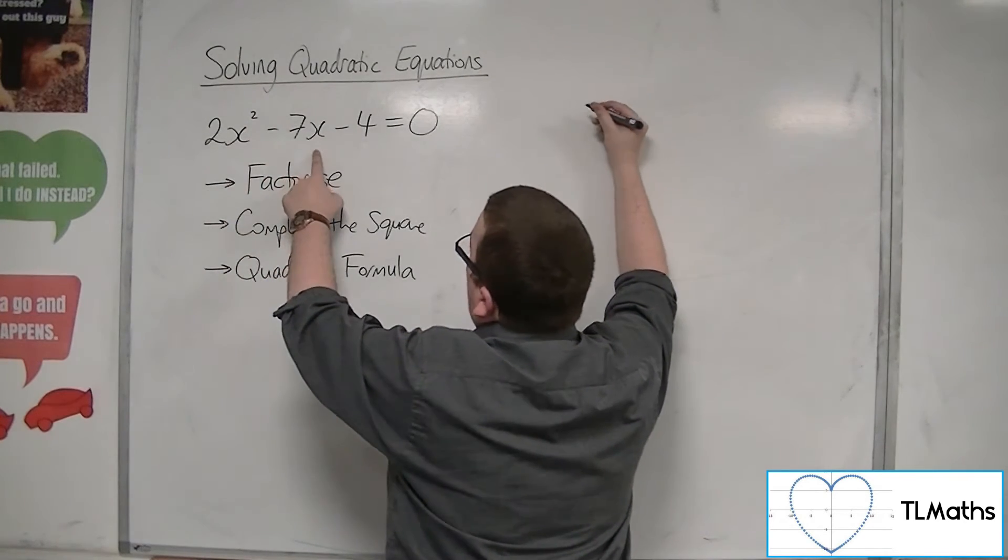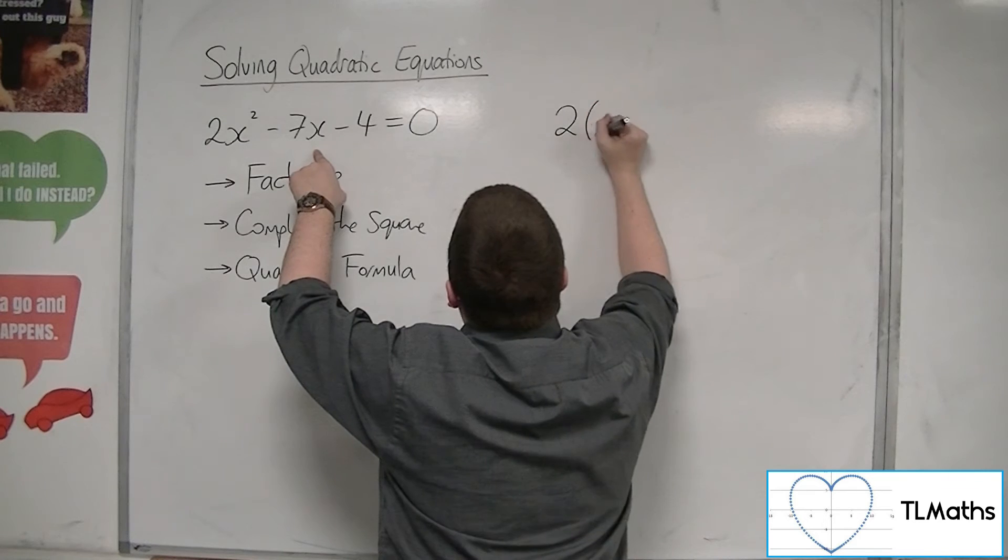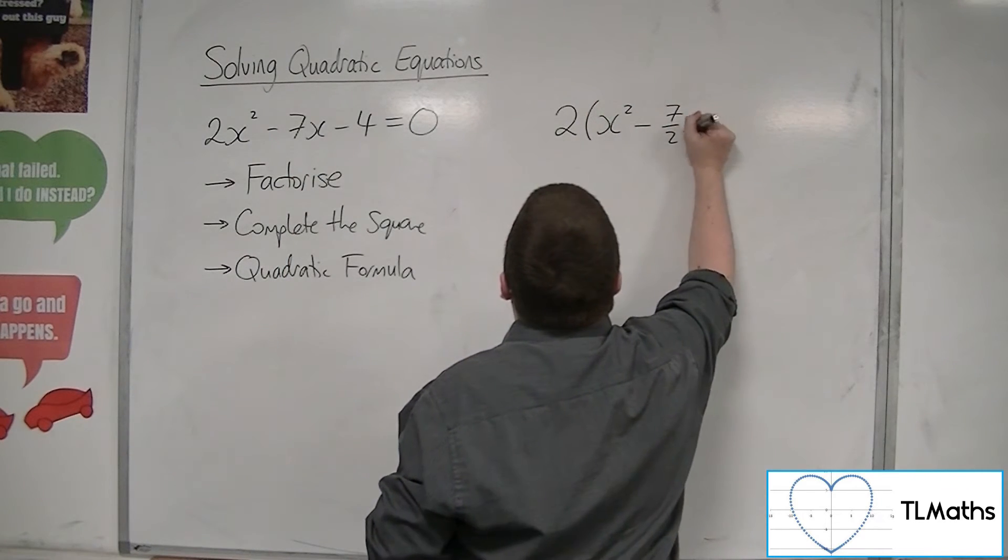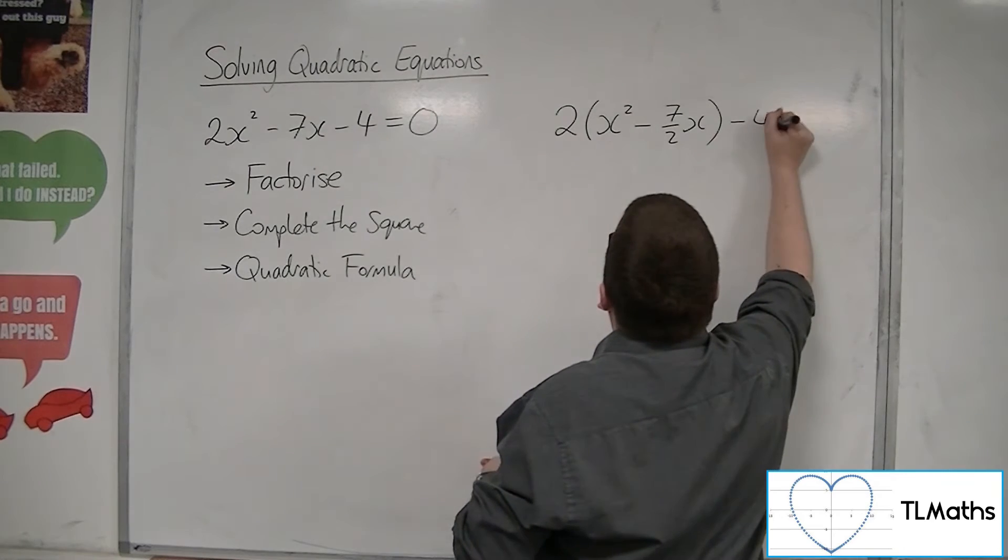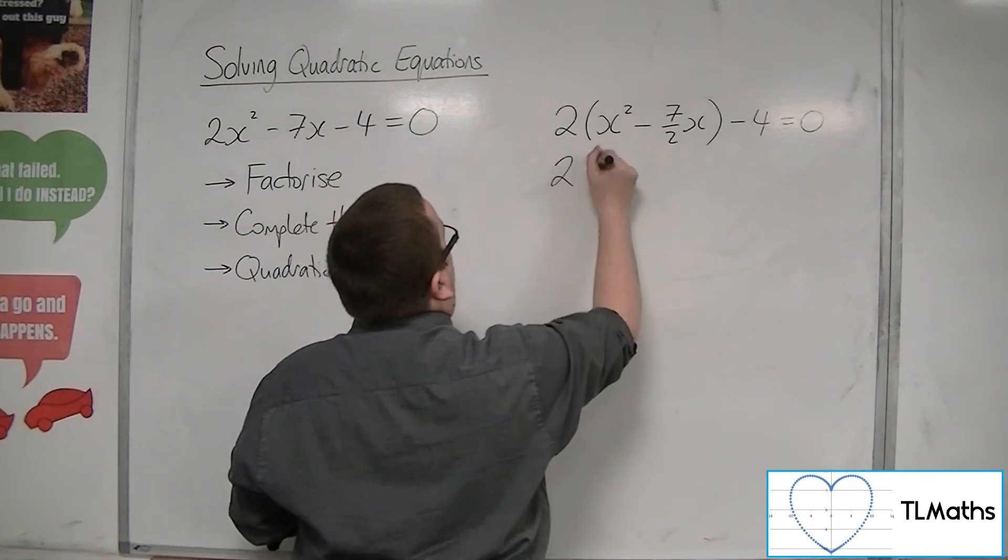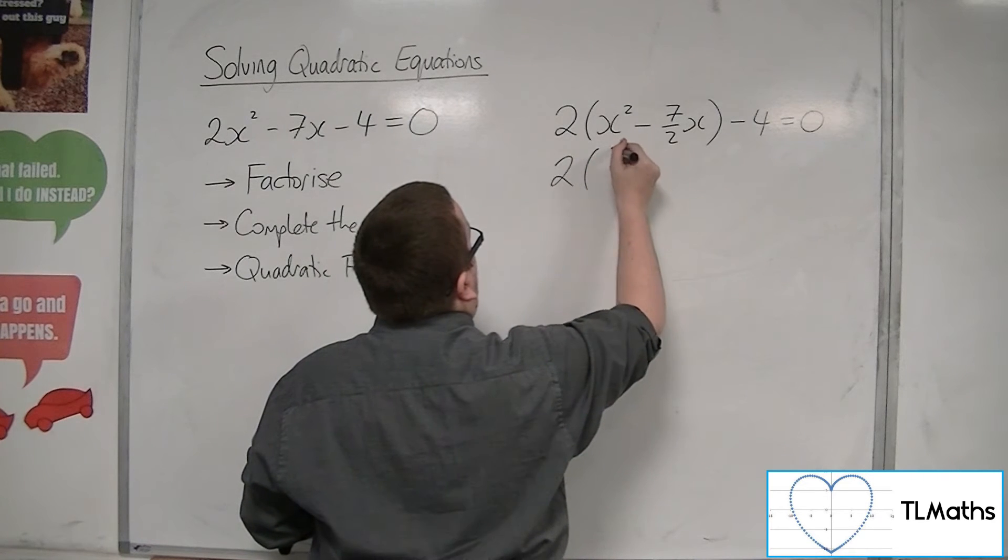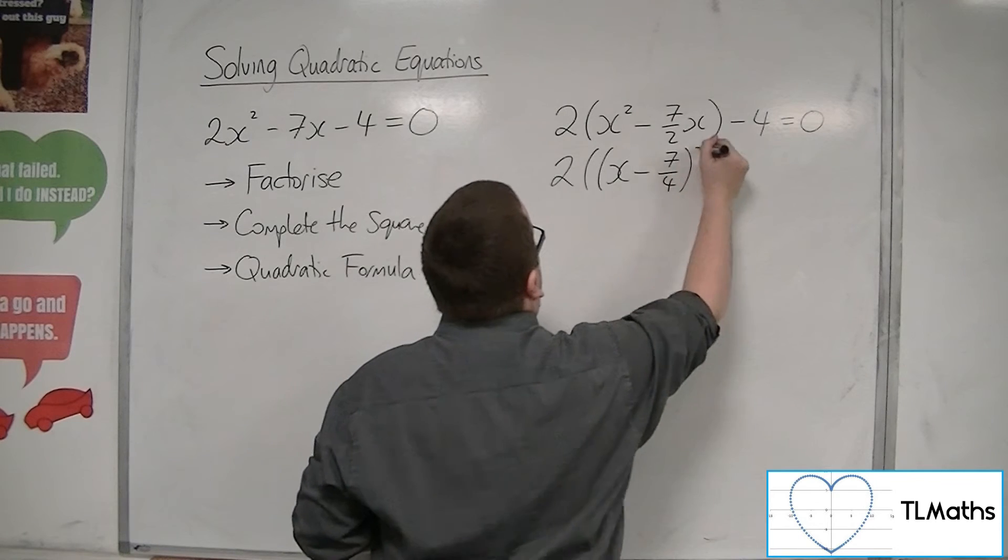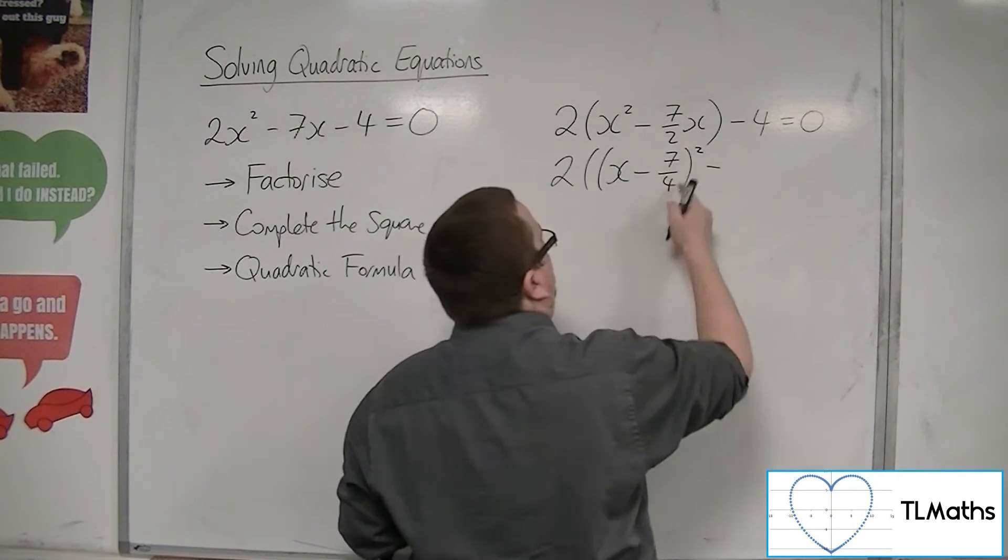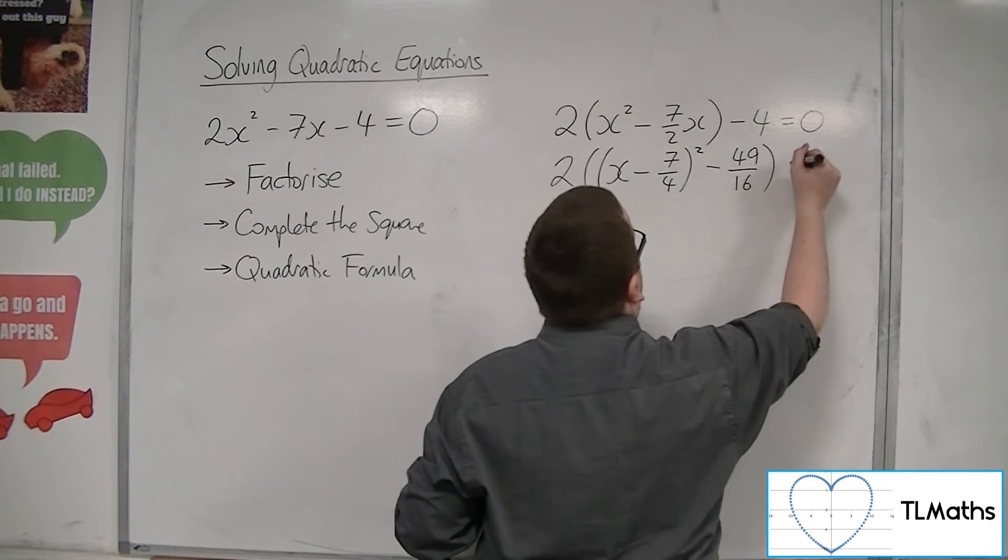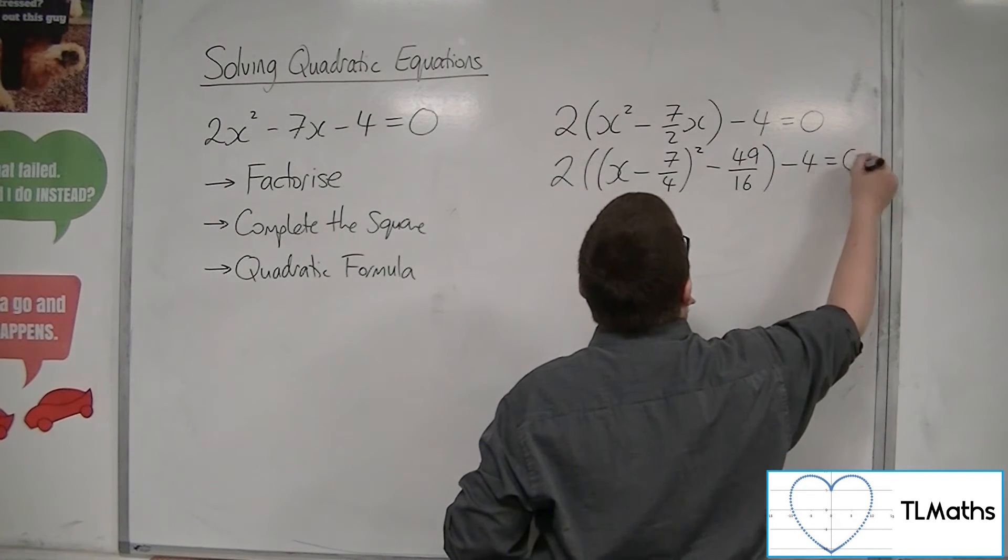So what we do is we pull the 2, factor the 2 out of the first two terms. So we're going to have 2 lots of x-squared minus 7 halves x minus 4 equals 0. Now I'm going to complete the square on what's inside that bracket. So I've got x minus 7 quarters squared. We take away this number squared, so take away 49 over 16. Close the bracket, minus 4 equals 0.